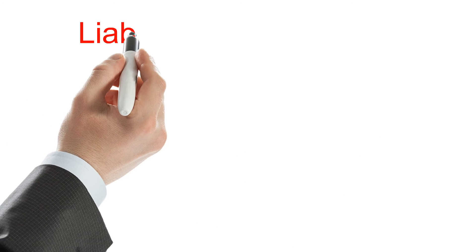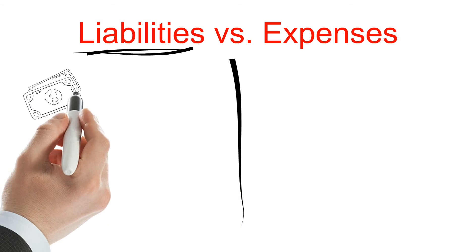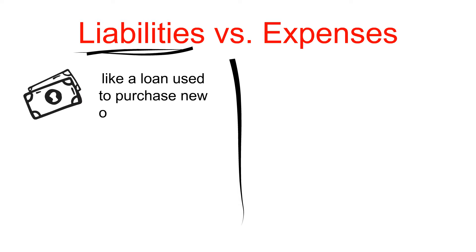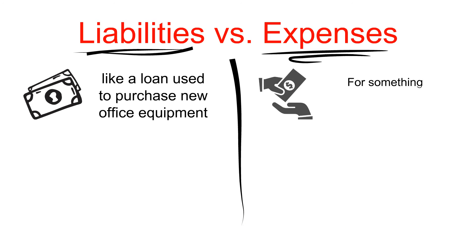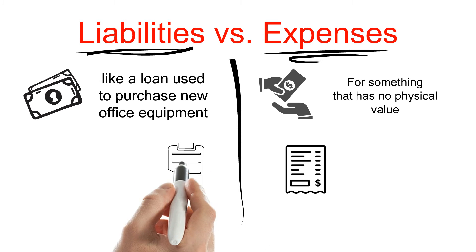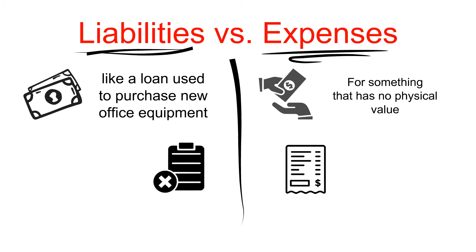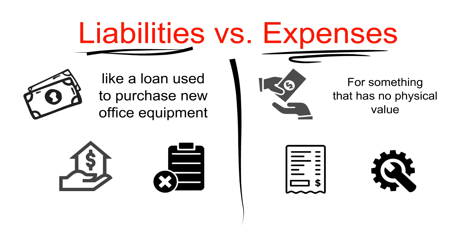One thing to remember is the difference between liabilities and expenses. A liability is money owed to buy an asset, like a loan used to purchase new office equipment. Expenses are ongoing payments for something that has no physical value. An example of an expense would be your monthly business cell phone bill. But if you are locked into a contract and need to pay a cancellation fee to get out of it, that fee would be listed as a liability. Utilities for your store are an expense; the mortgage on your store is a liability.